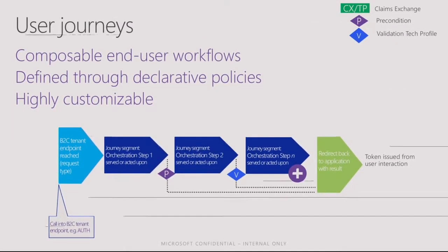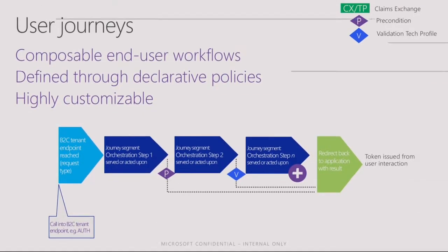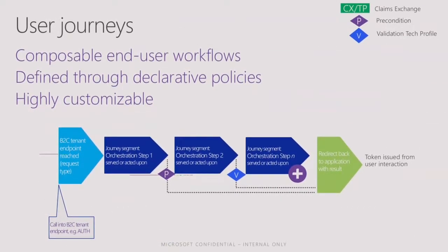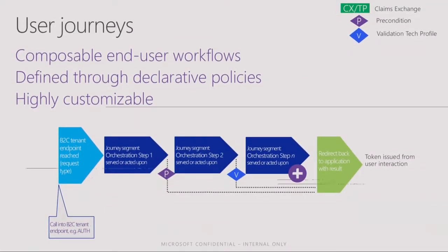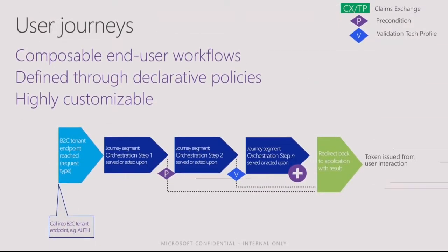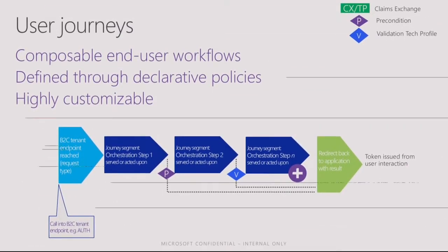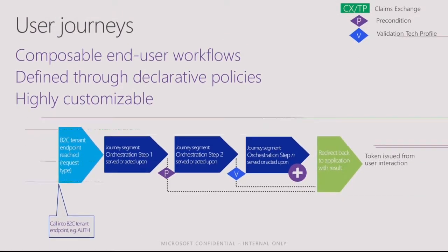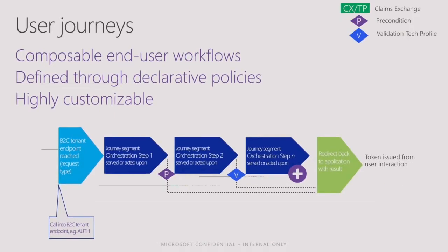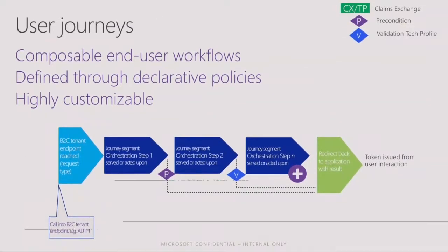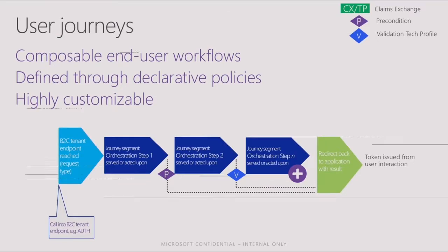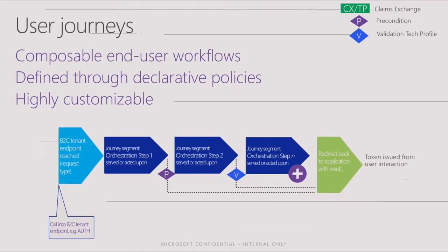During user journey execution, we can also have preconditions. Preconditions are always evaluated based on the value of claims. The value of claims can come from multiple sources: a technical profile, a validation technical profile, claims provided by the user, or claims declared with default values. For example, using the identity provider claim set to 'facebook.com', we can add a precondition saying if identity provider is 'facebook.com', skip this step, or if it's not 'facebook.com', skip this step and do something specific for Facebook.